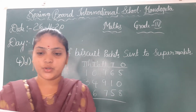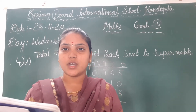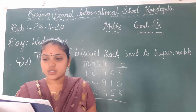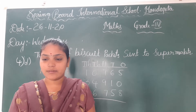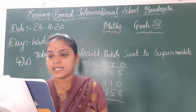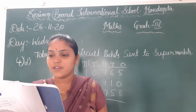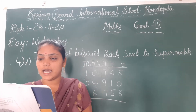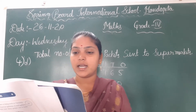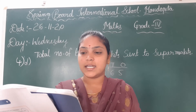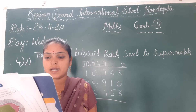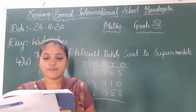A biscuit factory produces 72,422 biscuit packets in a day. 10,765 biscuit packets are sent to Lina supermarket, 34,910 are sent to Ram supermarket, and 6,758 are sent to Tattwa supermarket. Calculate the number of biscuit packets left.